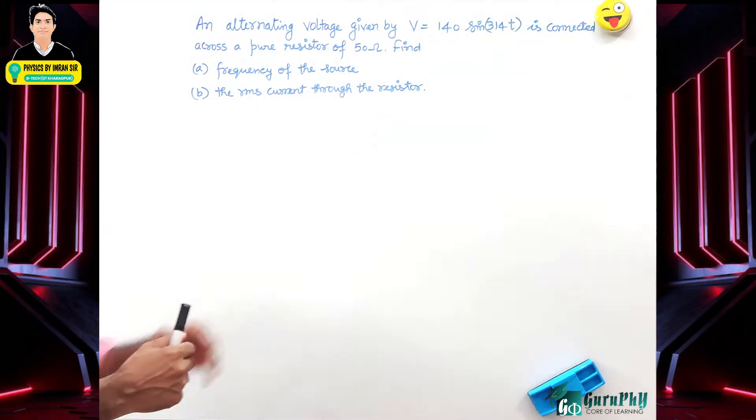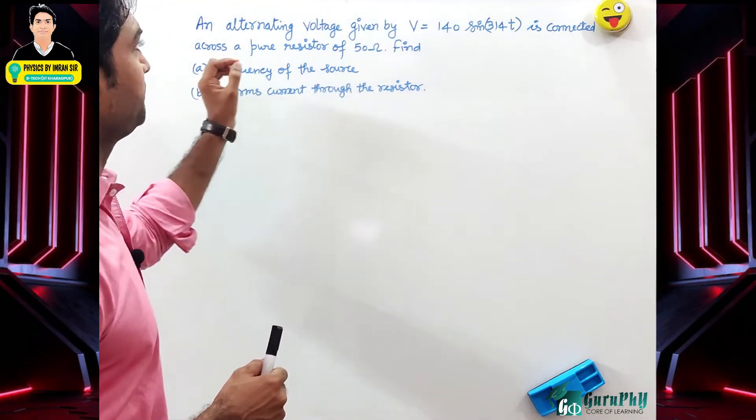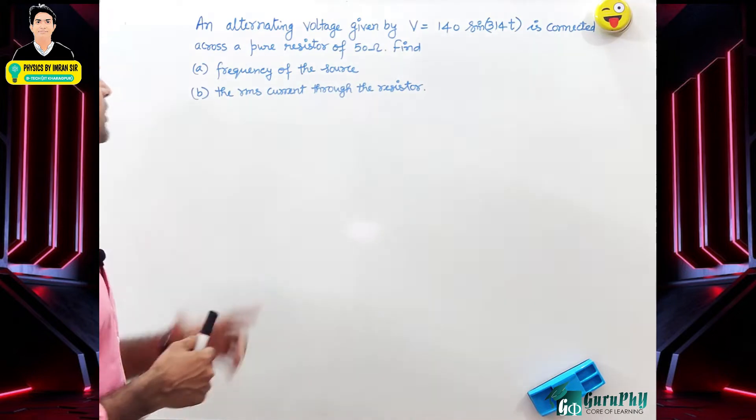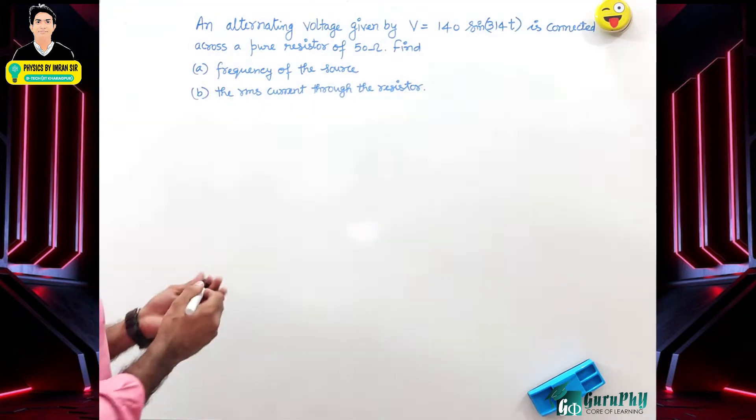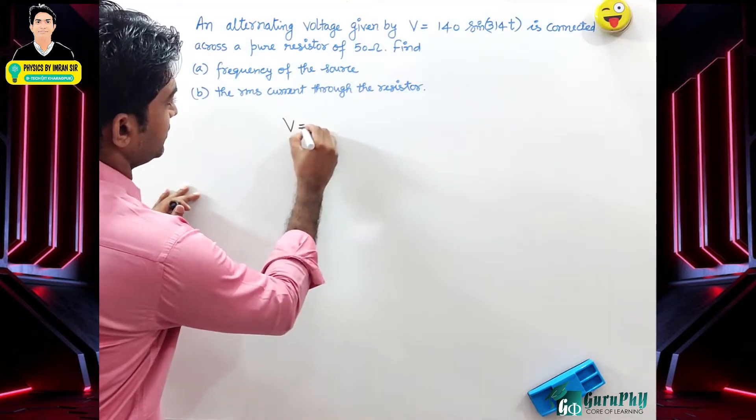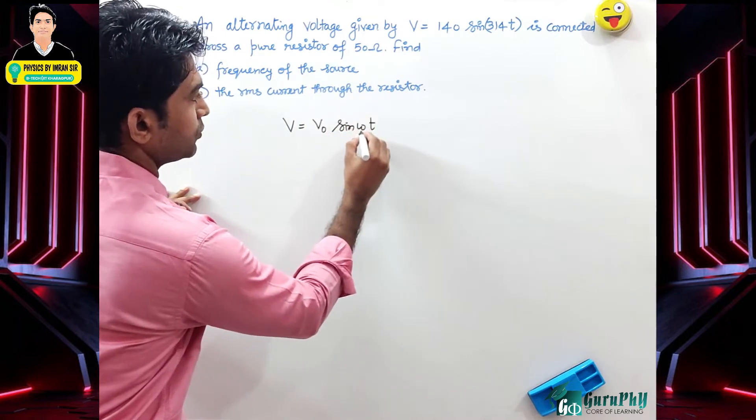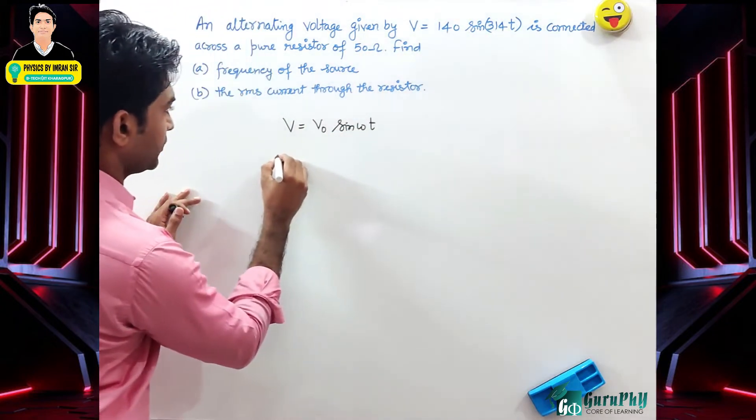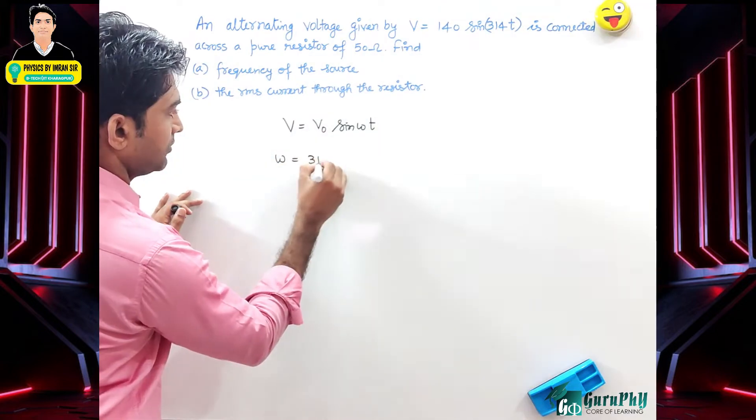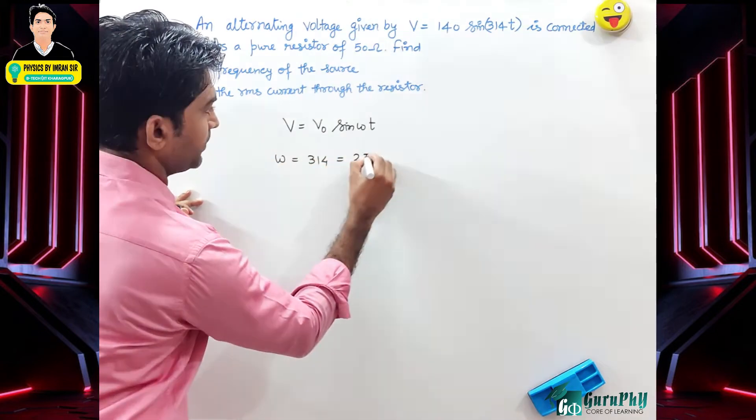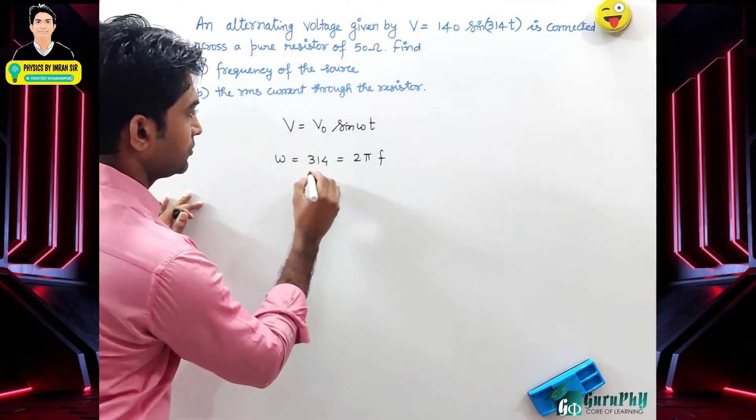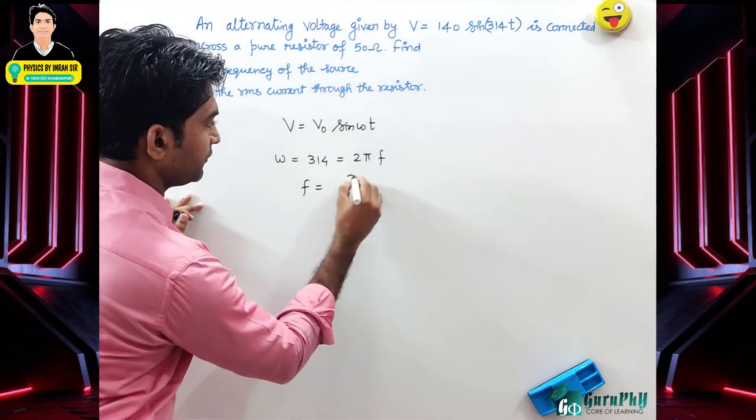An alternating voltage given by V = 140 sin(ωt) is connected across a pure resistor of 50 ohm. Find the frequency of the source. The voltage is V = V₀ sin(ωt), so ω = 314. Since ω = 2πf, we get f = 314 upon 2π.